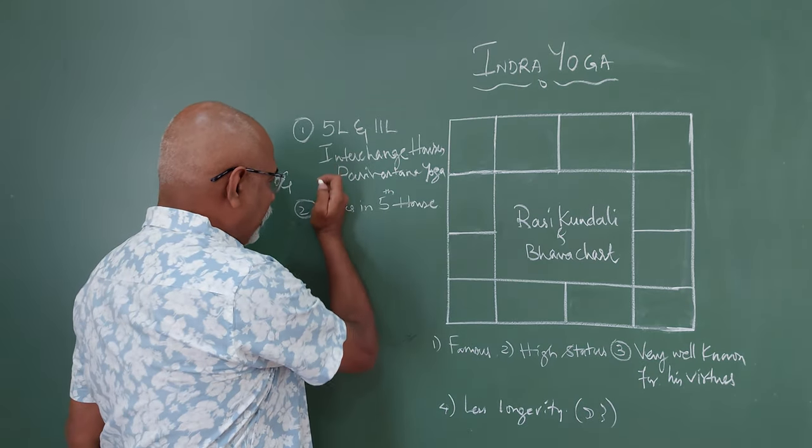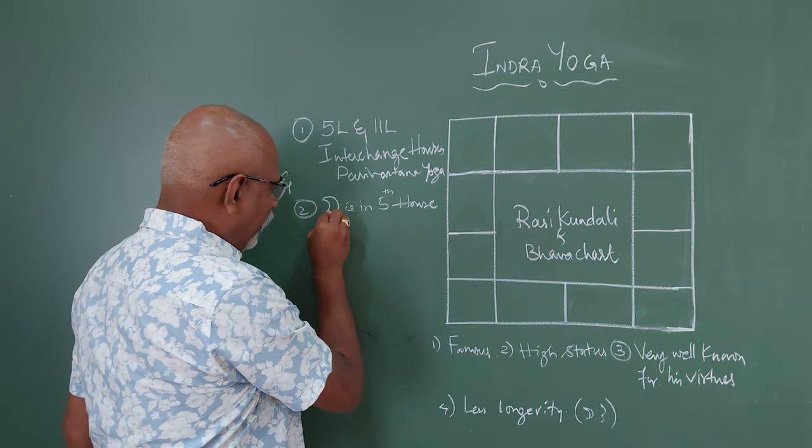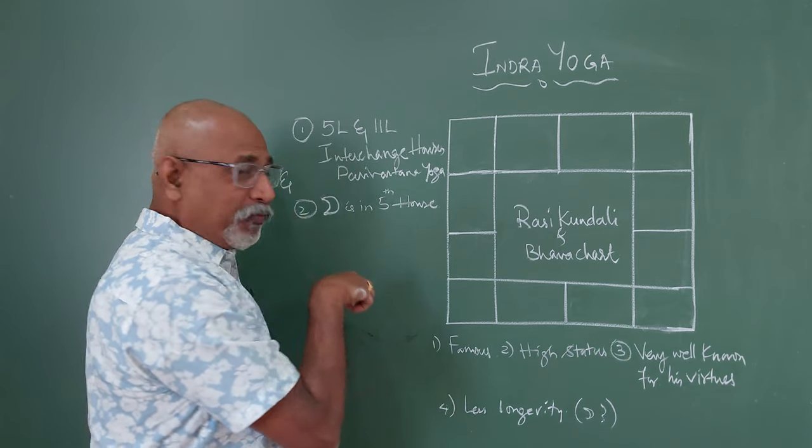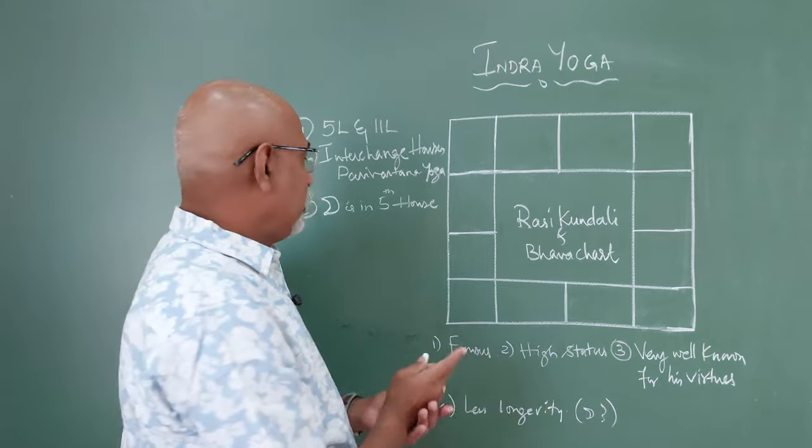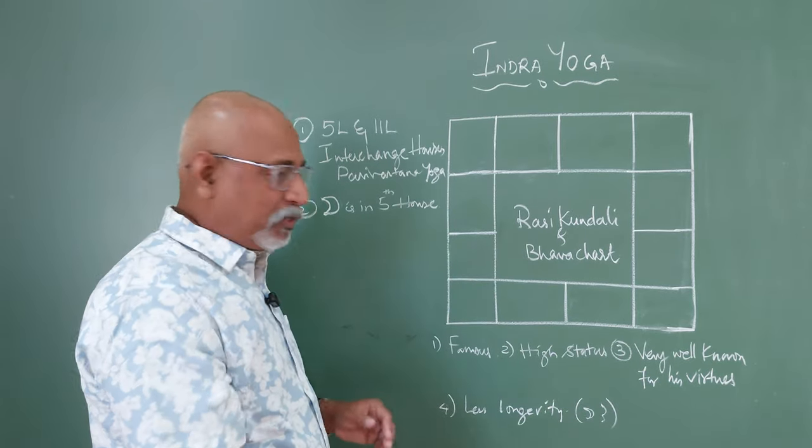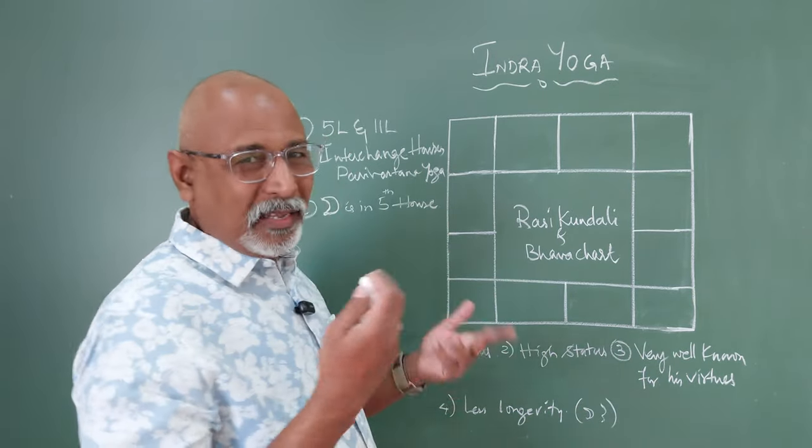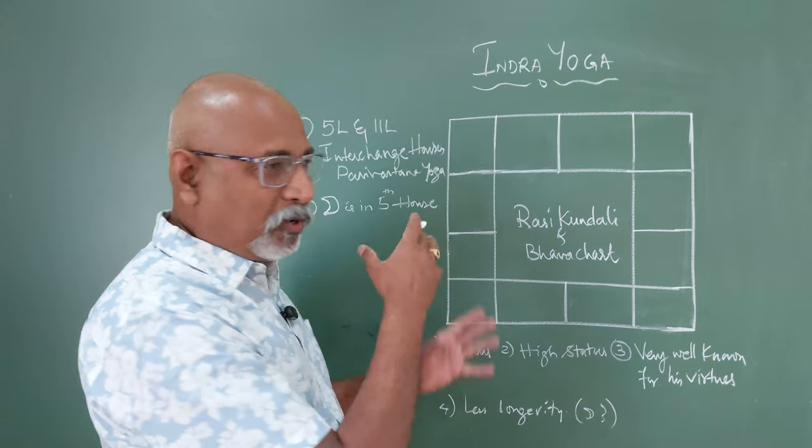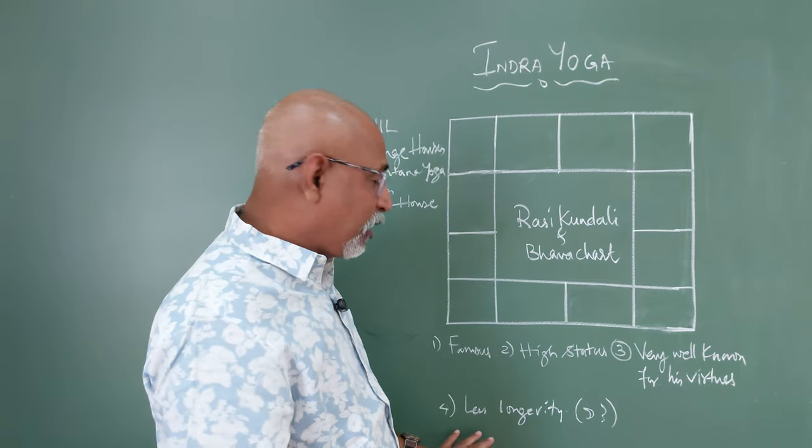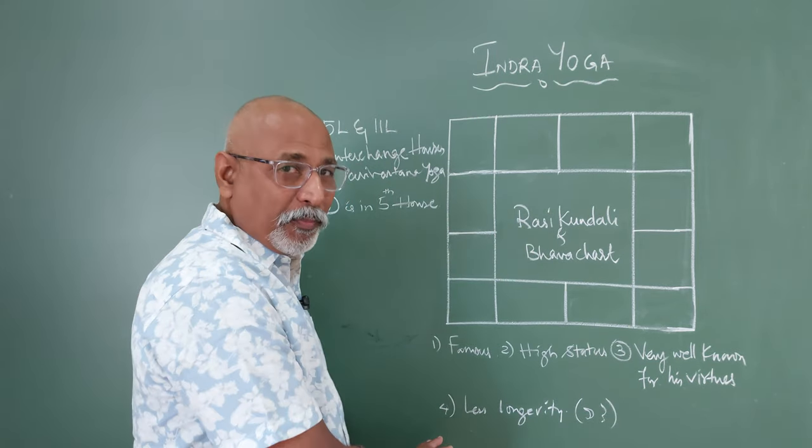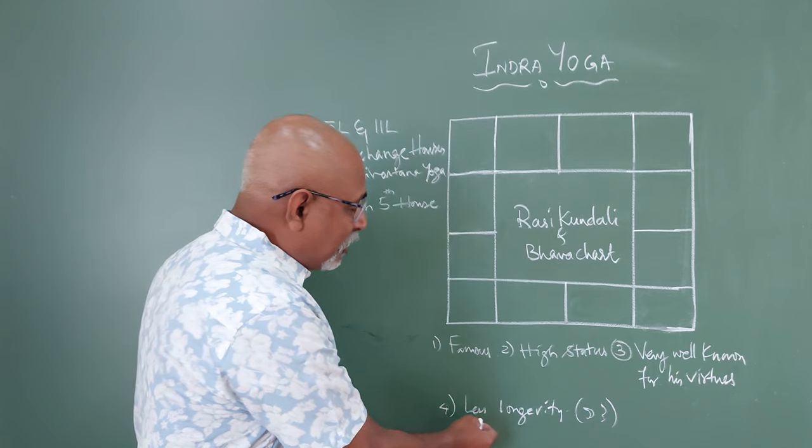The second one is, we need Moon to be posited in the 5th house, that is along with the 11th Lord. So let us understand what this is. Let us take any example. But actually, I would want to do for several ascendants to understand why this particular point, the 4th point, if you can read, less longevity.